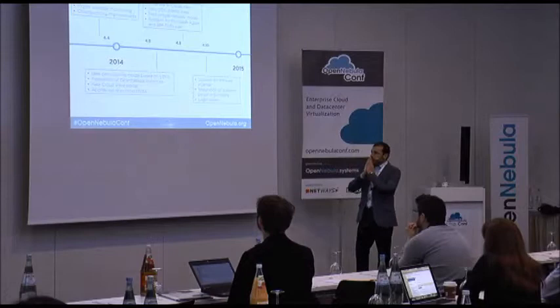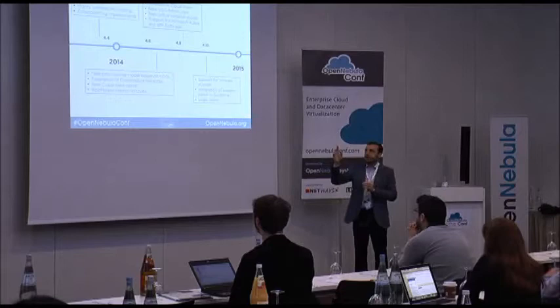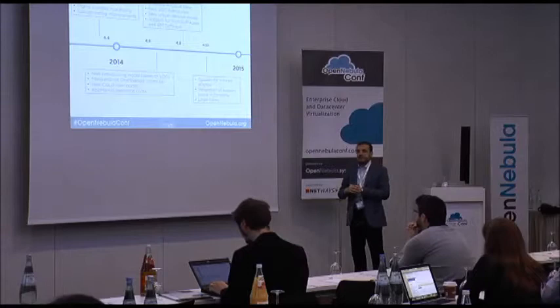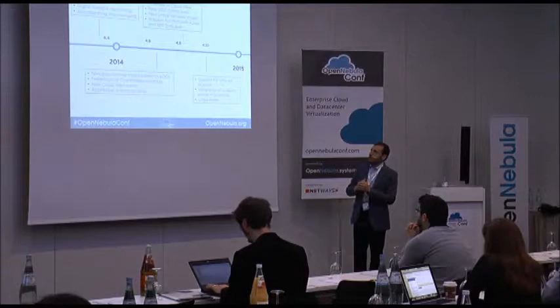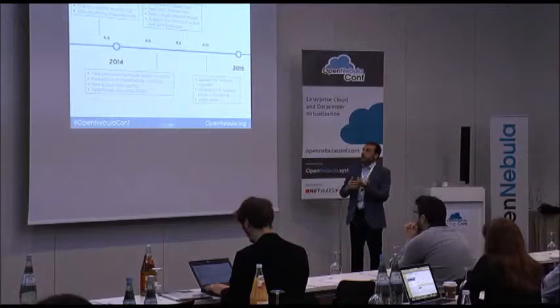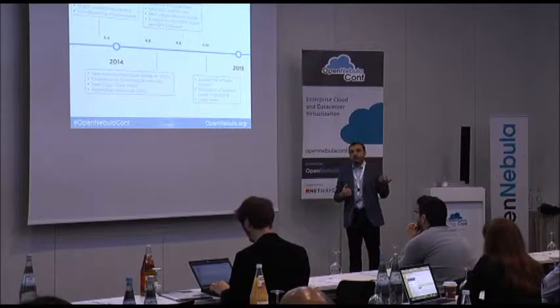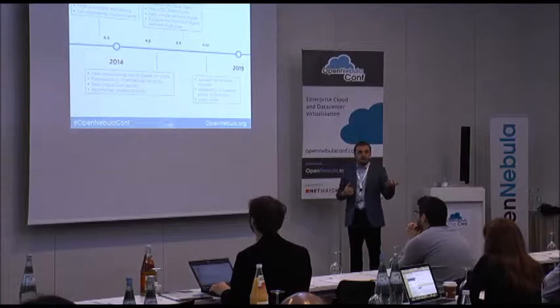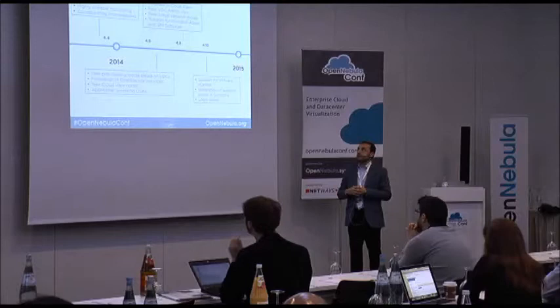About development: in the last year we have released four different versions of OpenNebula — 4.4, 4.6, 4.8, and 4.10 — bringing many innovations. In 4.4, we implemented support for multiple system data stores, provided policies for storage load, and rebuilt the monitoring system, which is now highly scalable. We have users running tens and hundreds of thousands of virtual machines. We also improved cloud bursting to Amazon EC2.